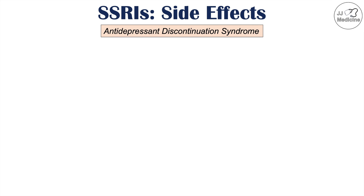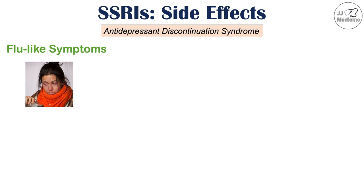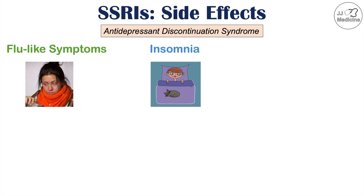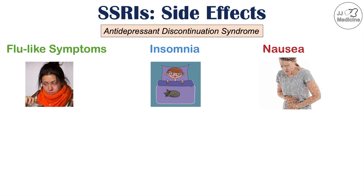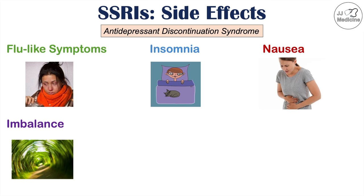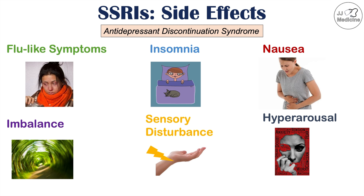Then there is antidepressant discontinuation syndrome, which occurs with abrupt cessation of an SSRI or a decrease in dose that is too quick. This condition can lead to flu-like symptoms such as malaise and fatigue — feeling generally unwell. Insomnia, nausea, imbalance, and sensory disturbances can also be noted, including paresthesias, numbness, tingling, and shocking sensations around the body, as well as hyperarousal — agitation, anxiety, and aggression. The mnemonic FINISH can be used to remember the categories of symptoms of antidepressant discontinuation syndrome.